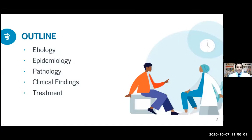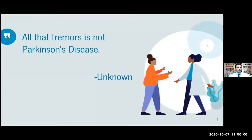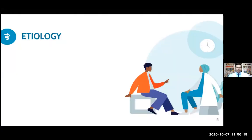This is the outline for today. Let's start with the etiology. I'd like to introduce the idea that not all that tremors is Parkinson's disease — let's find out what it is then. The first thing is idiopathic Parkinson's, which is actually called Parkinson's disease. It does not have another cause, and it will have a sustained response to treatment.